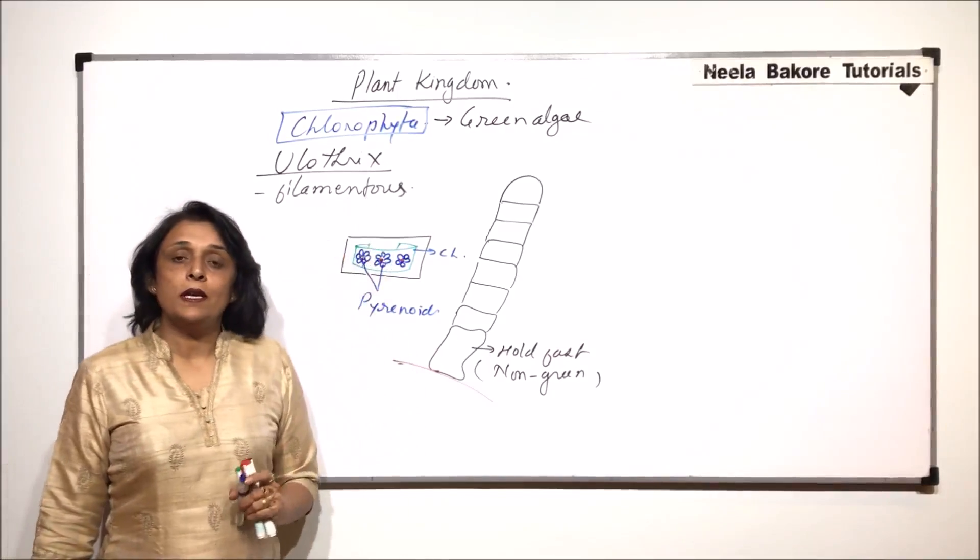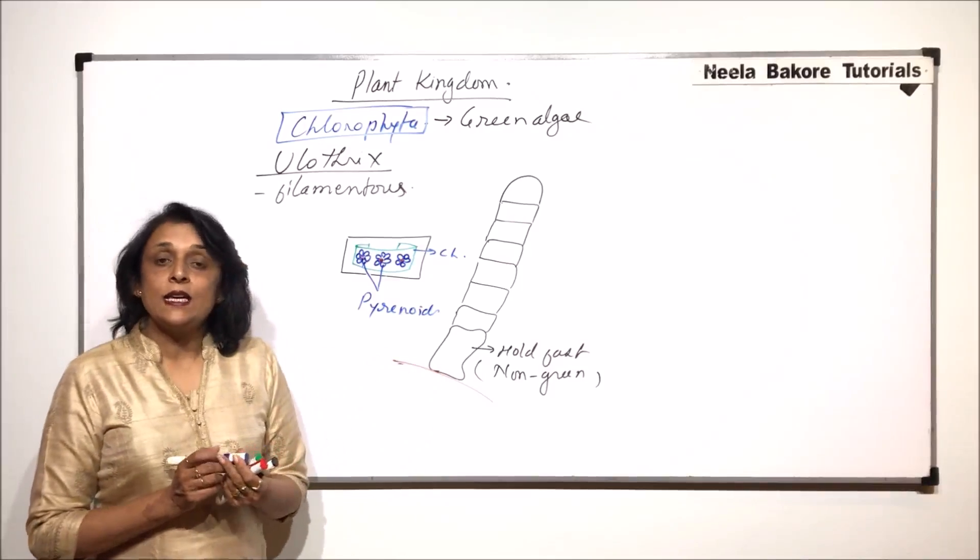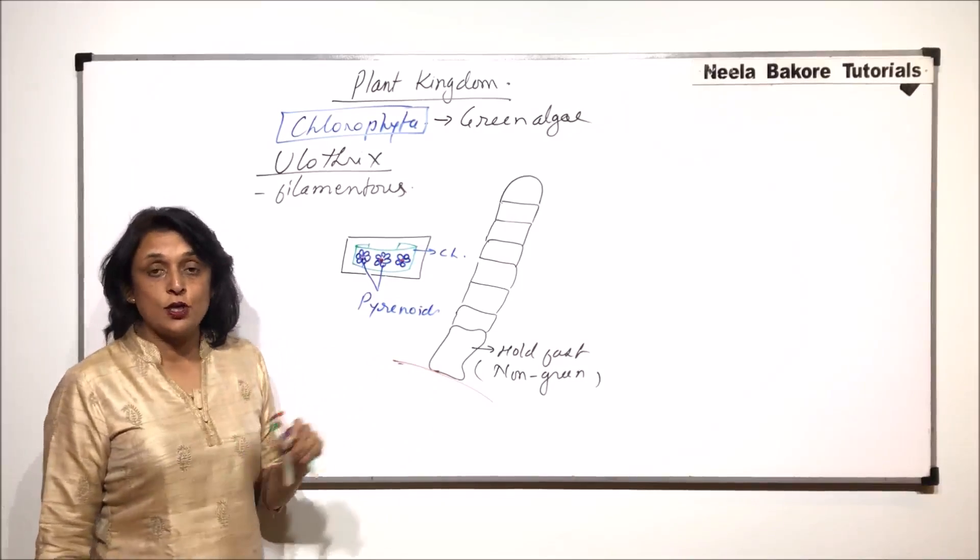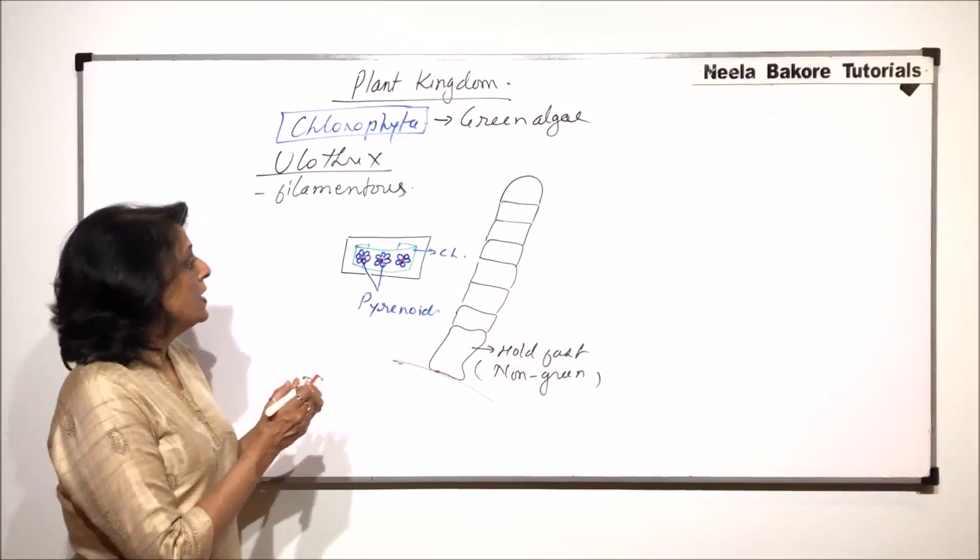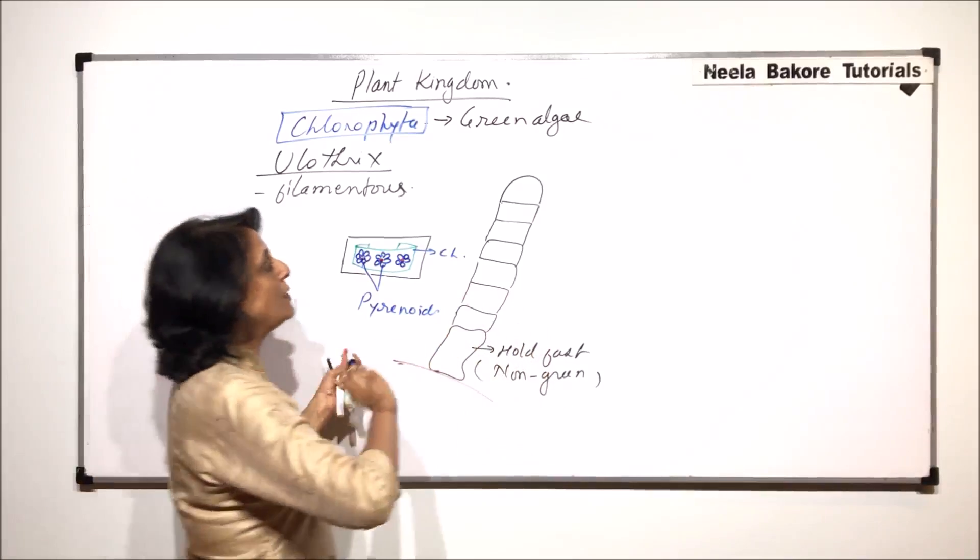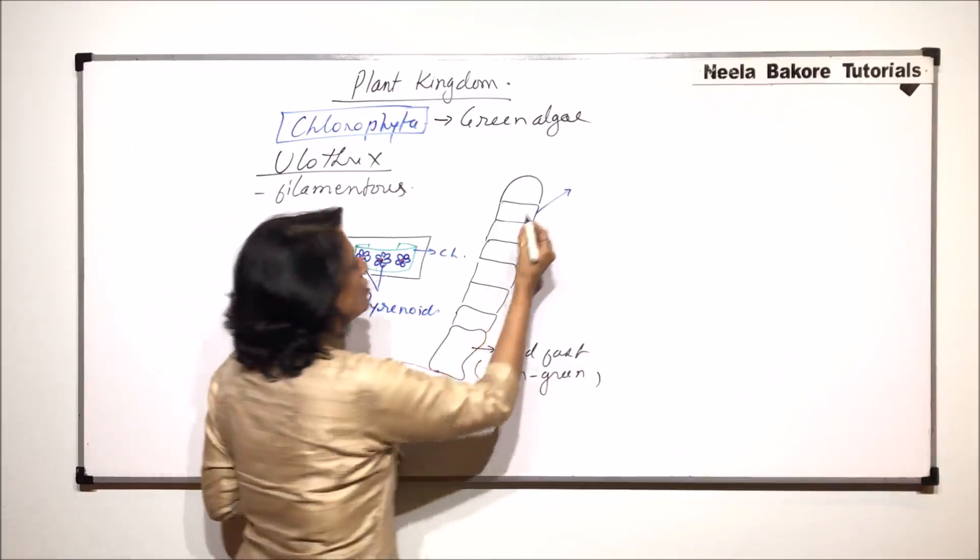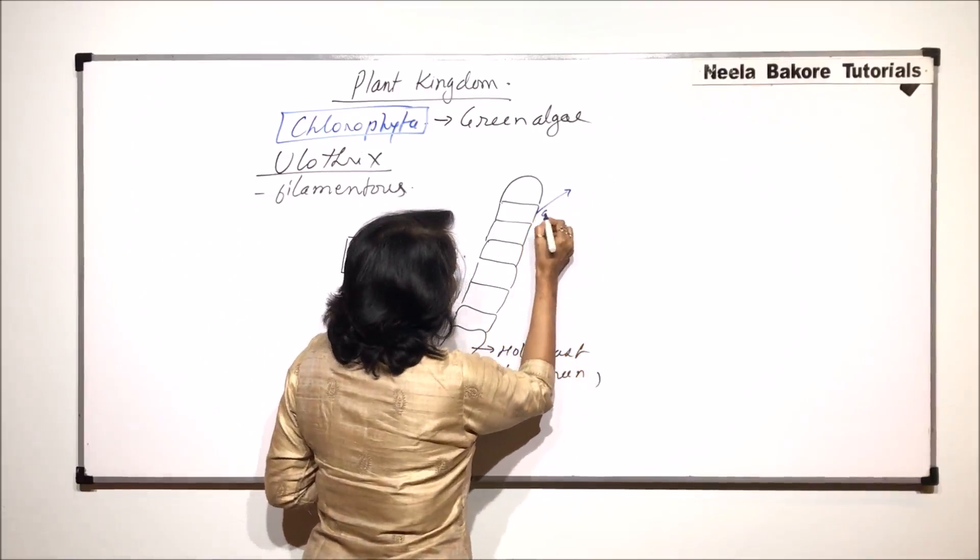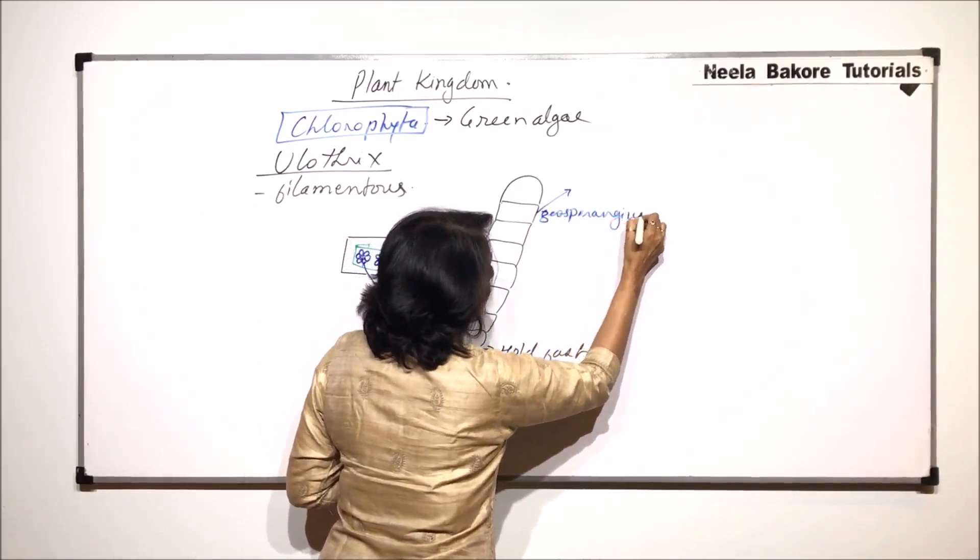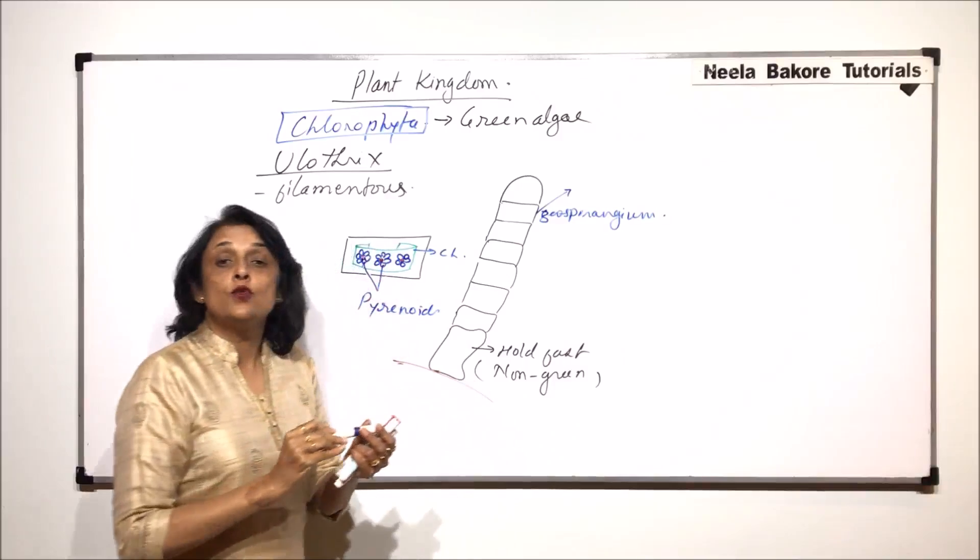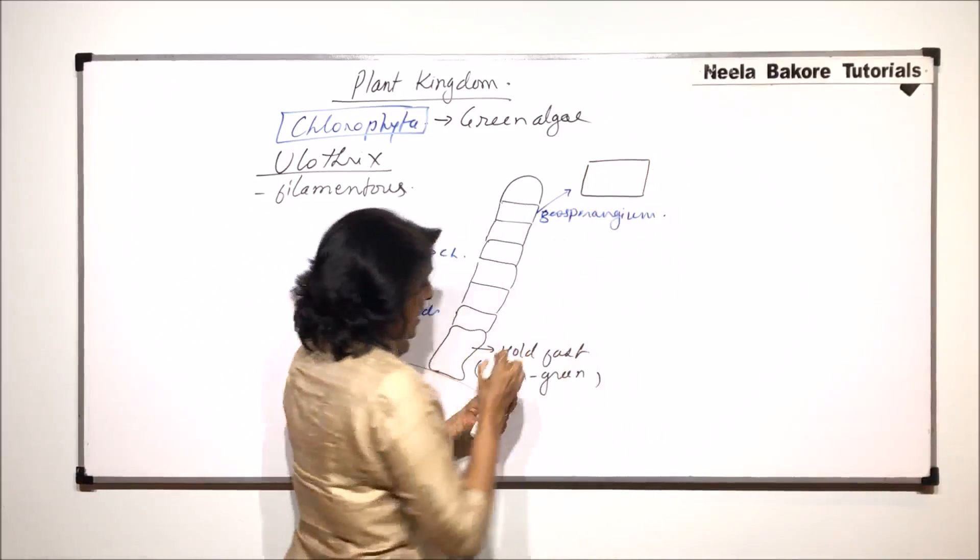In case of ulothrix, both asexual and sexual reproductions are seen. Asexual reproduction is by zoospore formation and sexual reproduction is by gamete formation and zygotic meiosis. So now if we have to talk about asexual reproduction then say this cell. This cell is going to act as a zoosporangium. That means in this cell the zoospores will be produced. So let us enlarge this cell and now in this cell the protoplast, that is the cytoplasmic material, is going to undergo mitotic divisions.